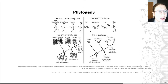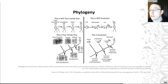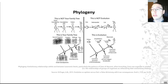We share parents with siblings, and our parents share ancestors with their siblings, and so on all the way down. Just like that, we can think of a broad-scale evolutionary tree.